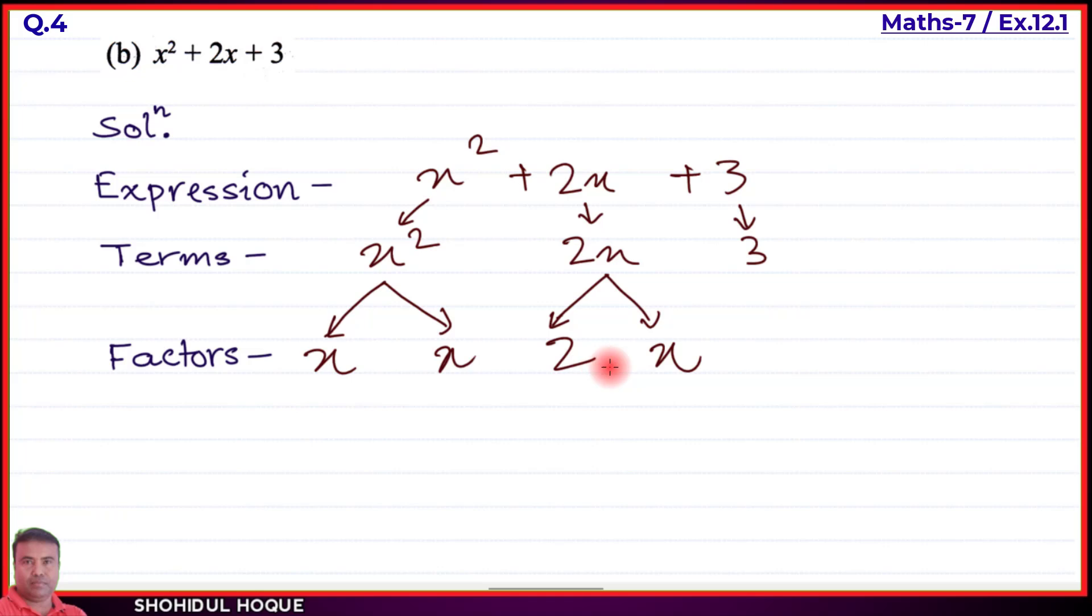The factor 2 is a constant, and x is a variable. The third term 3 is a constant with factor 3. This completes the tree method for part (b).